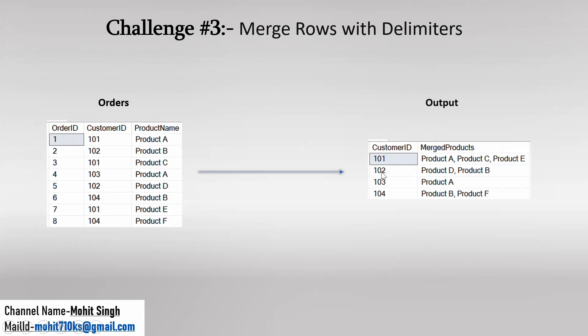Similarly, if you observe for customer IDs 102, 103, and 104, the logic is exactly the same. So if we summarize the output logic: in the output, we need customer ID and all the products available for that customer in the orders table, merged using a delimiter — in this case, a comma. So this is how the output table will look like. This is the requirement.